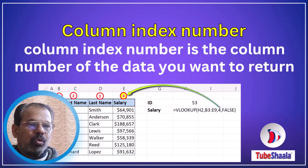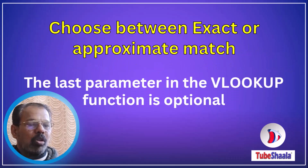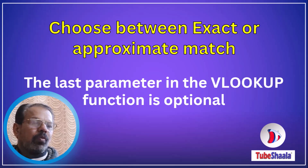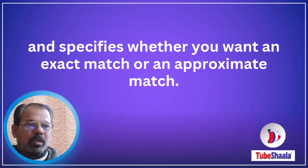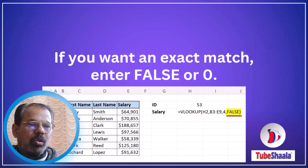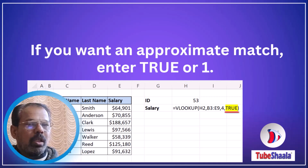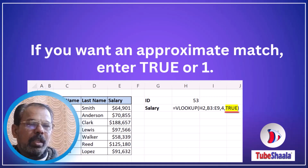Then we need to choose between an exact or approximate match. The last parameter of the VLOOKUP function is an optional one, and it specifies whether we want an exact match or an approximate match. If we want an exact match, we need to enter false or 0 to find the desired result. If we want an approximate match, we can enter true or 1, and once we close the bracket and hit Enter, we will get the approximate match for the desired result.